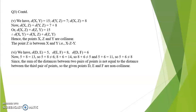Sub-question 6. We have distance DE equal to 5, distance EF equal to 8, distance DF equal to 6. Now we shall try various possibilities. We have 5 plus 8 equal to 13, which is not equal to the remaining side 6.